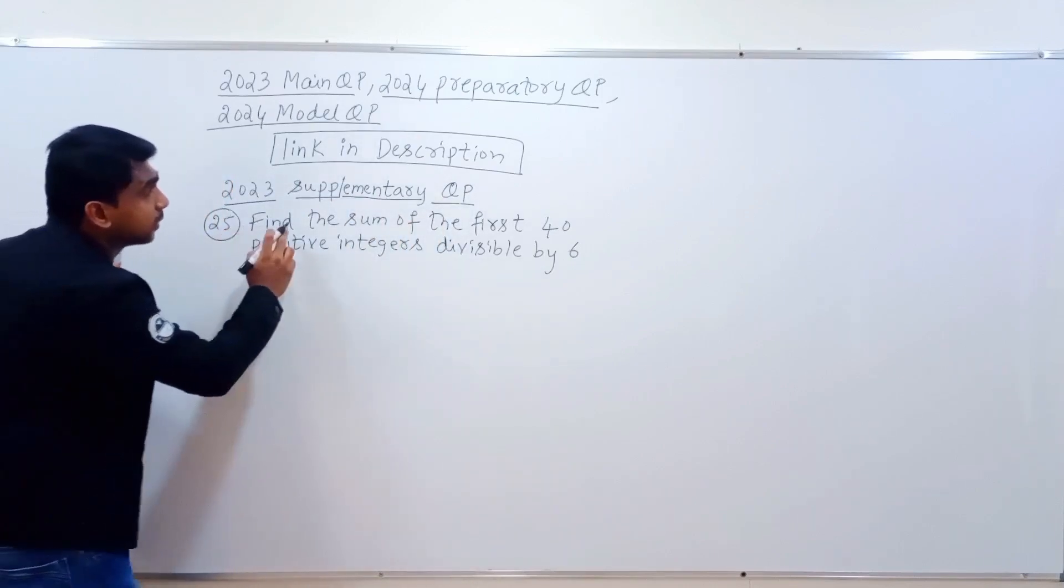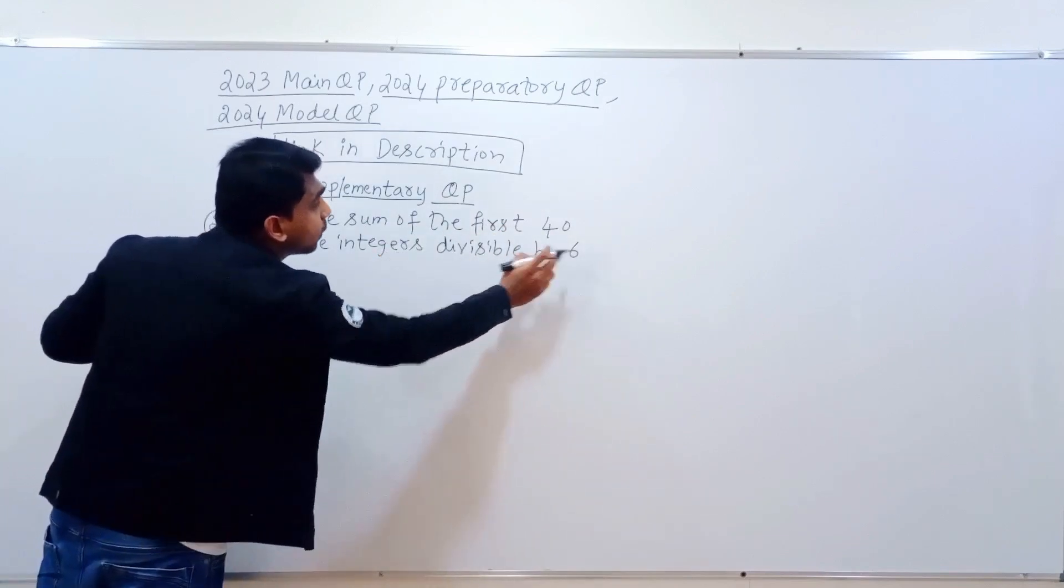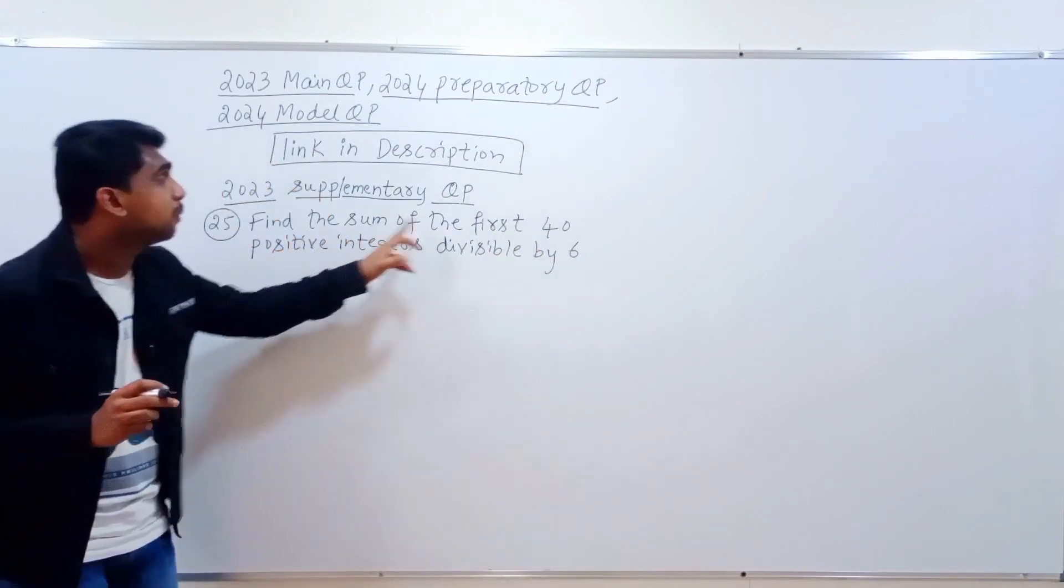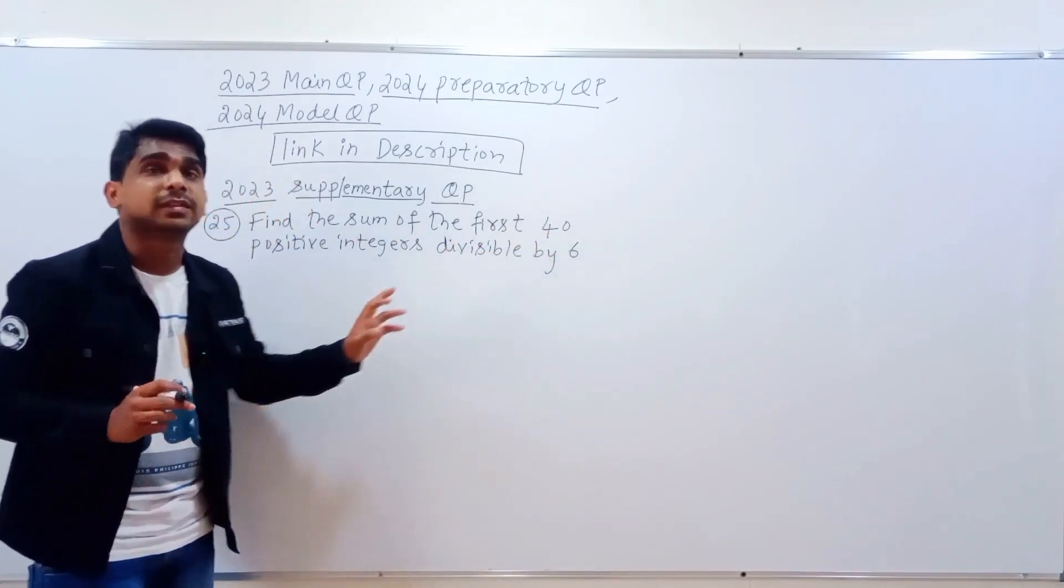Okay, this is the 25th question. Find the sum of the first 40 positive integers divisible by 6. That means the sum of first 40 positive integers divisible by 6.